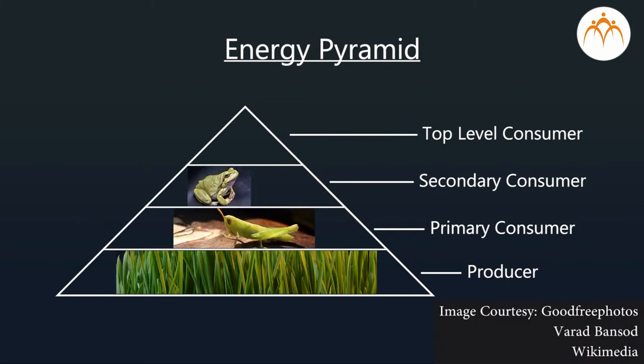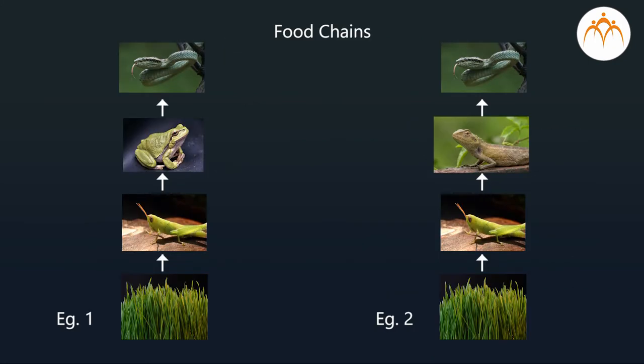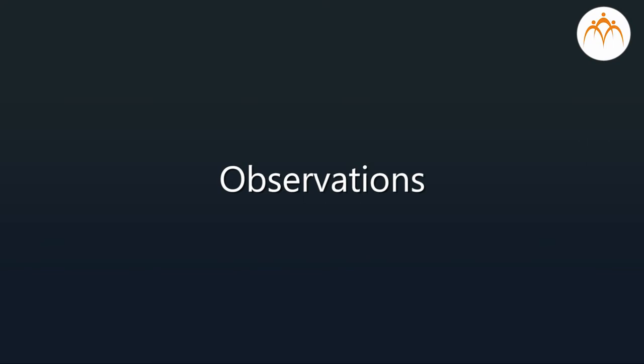Draw a pyramid to represent the number of these organisms — the base will be occupied by the largest group and the apex by the smallest group. Collect pictures of organisms you have observed and paste them in proper order to construct your food chain, then explain the food chain briefly. Observation: Food chains begin with green photosynthetic plants, called producers, which absorb solar energy and convert it into food energy.